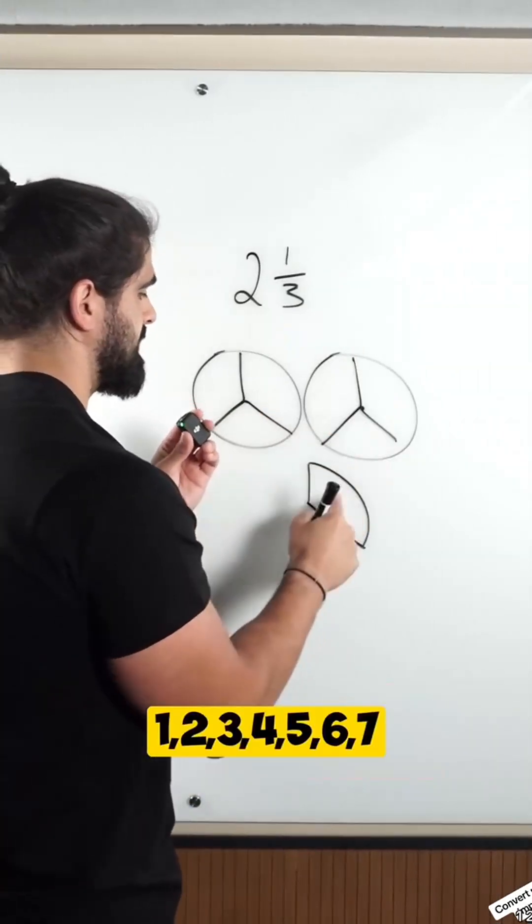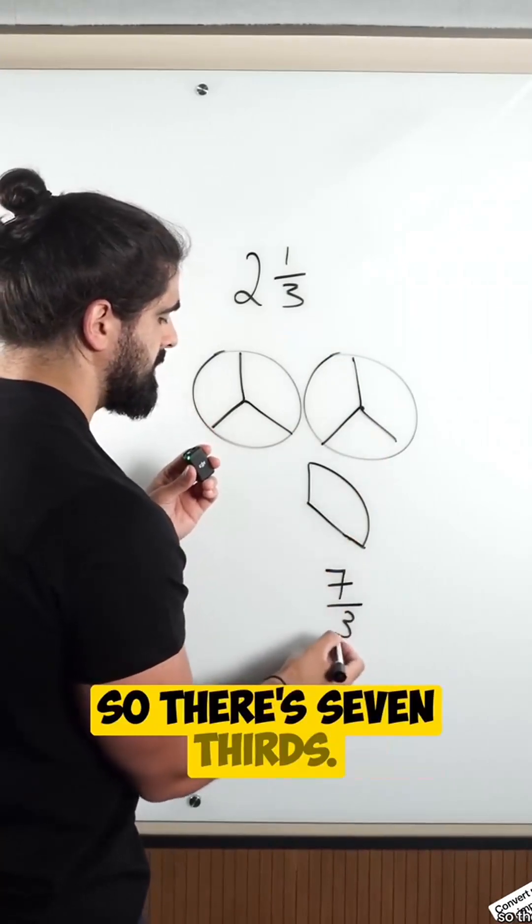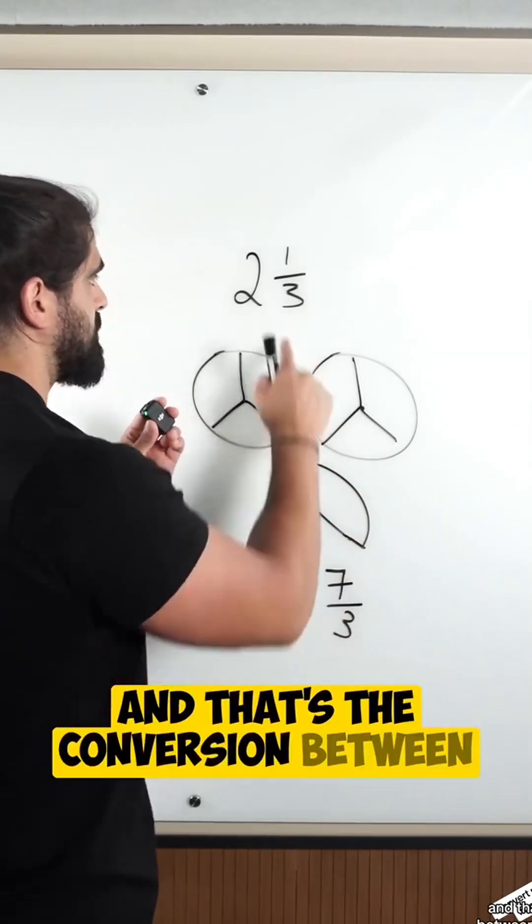1, 2, 3, 4, 5, 6, 7. So there's 7 thirds, and that's the conversion between a mixed and improper.